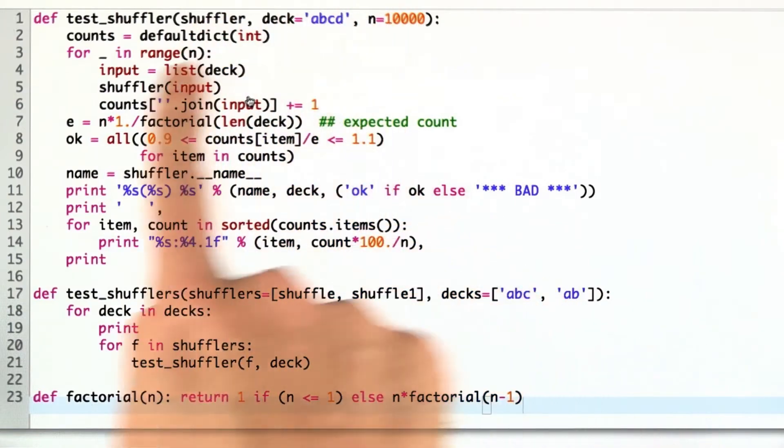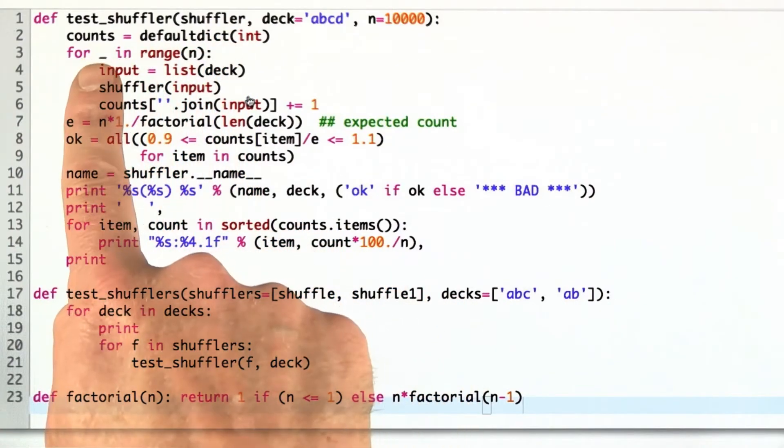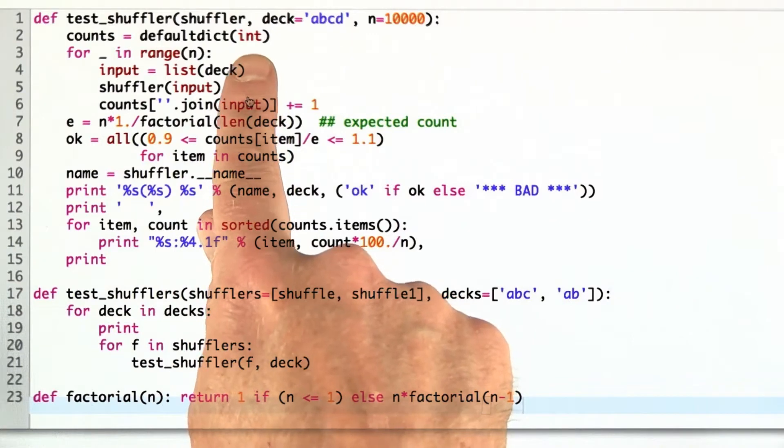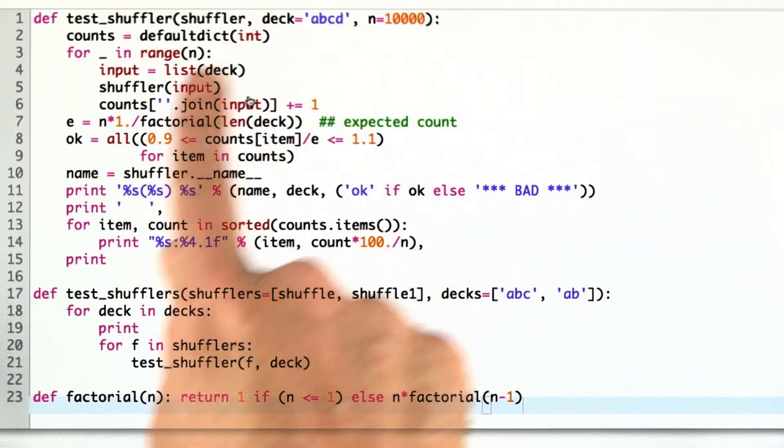What am I going to do? First, I'm going to keep track of the counts of every result that comes back from the shuffler. I'm going to start counts off as a default dictionary. That means that its default value is the default value of integer, which is 0. The counts all start at 0. Then I go from range n, so n times.